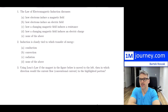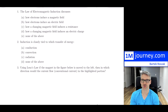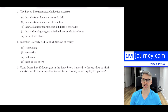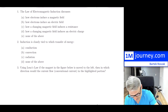Question number one: the law of electromagnetic induction discusses — how electrons induce a magnetic field? No. How electrons induce an electric field? No. How a changing magnetic field induces a resistance? No. How a changing magnetic field induces an electric charge? No. It actually has to do with a changing magnetic field inducing a current that flows. So the answer is none of the above.